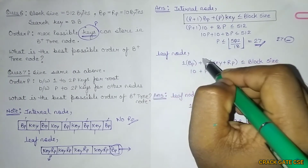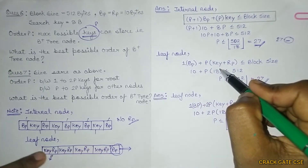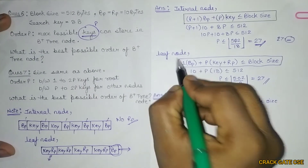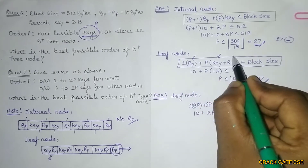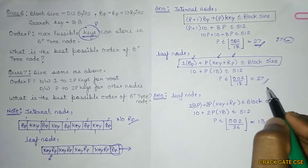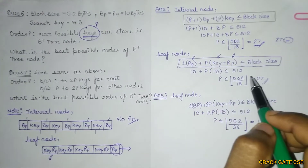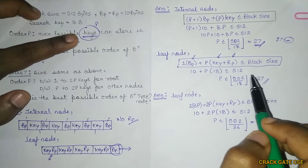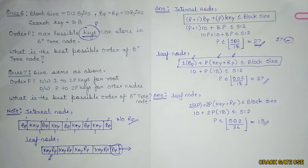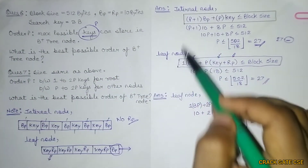Now considering the leaf node: there will be one block pointer with P key-record-pointer pairs. The size of this has to be less than the block size. Substituting block pointer size 10, key size 8, and record pointer size 10 — that gives key plus record pointer as 18. Calculating P from the leaf node also gives 27. This shows that whether you consider the internal node or the leaf node, the order will be the same when the order is defined as maximum possible keys.